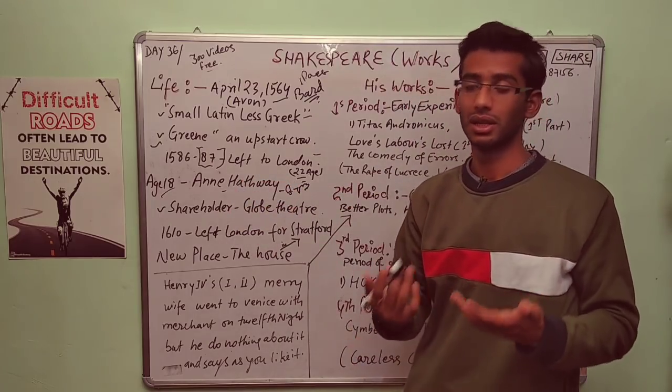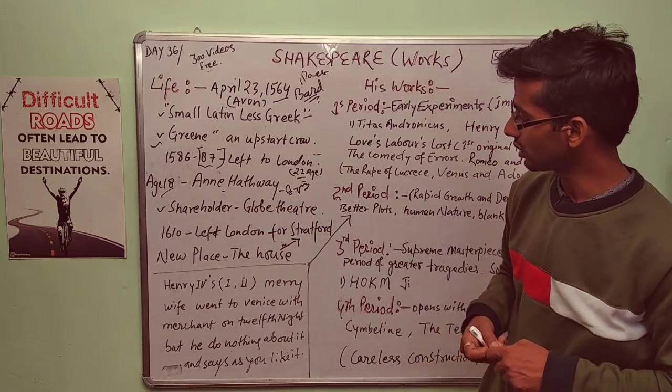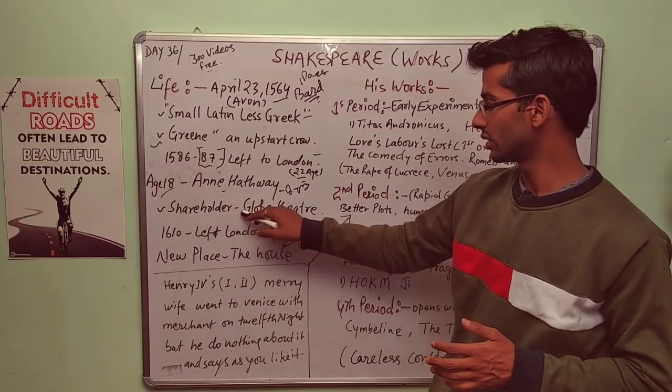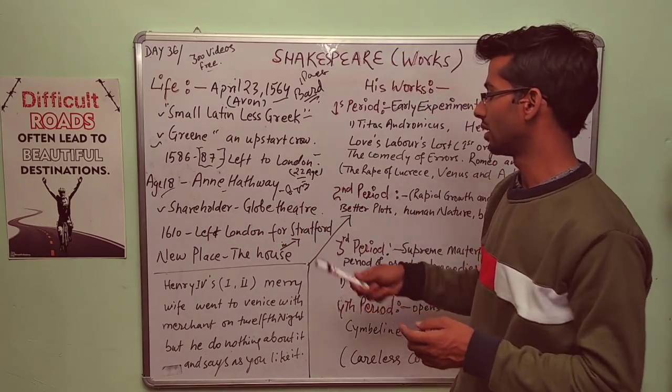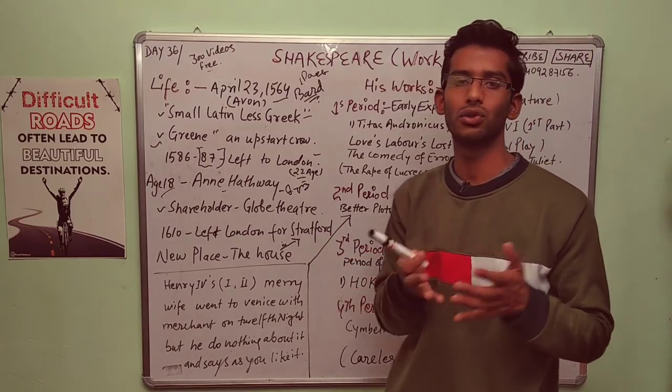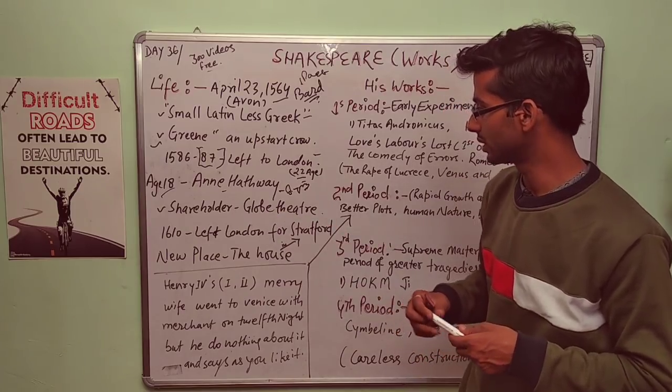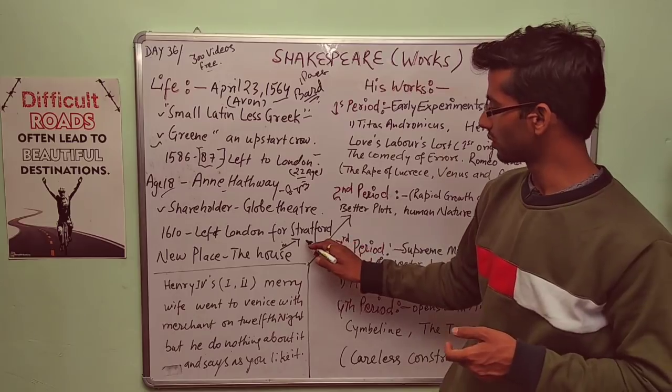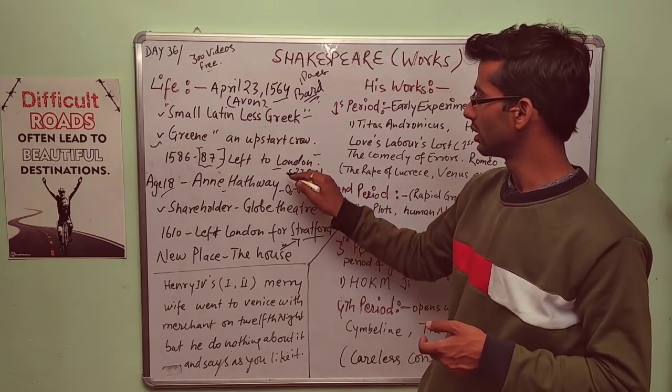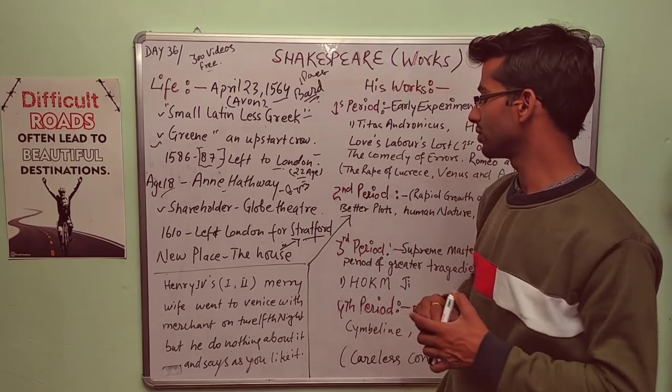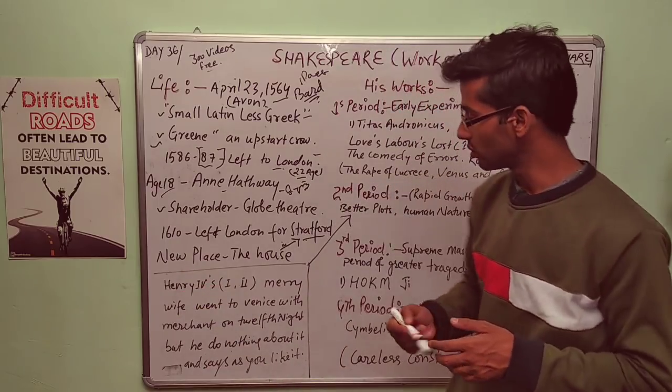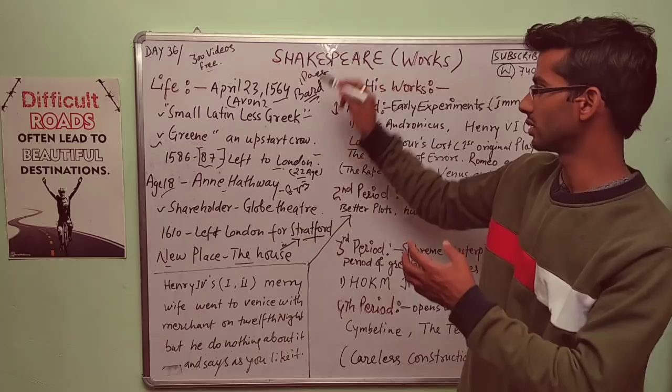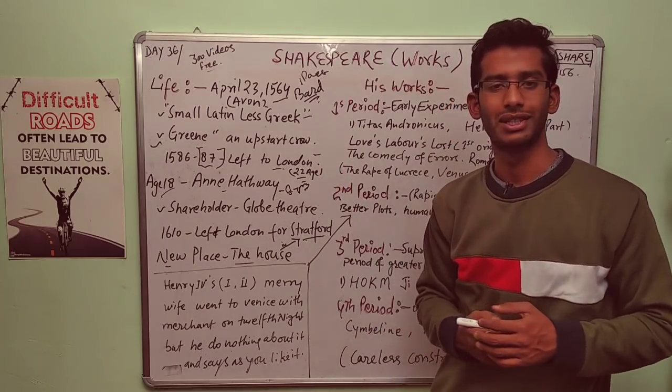When he went to London he became really famous. He was shareholder in Globe Theater. Shakespeare was associated with Globe Theater and he was shareholder in it. Next thing is he left London for Stratford-upon-Avon and New Place. New Place will help you in your exam because these are asked.